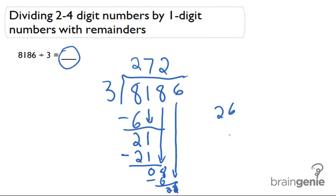3 goes into 26 eight times. 8 times 3 is 24. We subtract 24 from 26 and get 2. There's no more numbers to bring down, so that is our remainder. We have a remainder of 2.